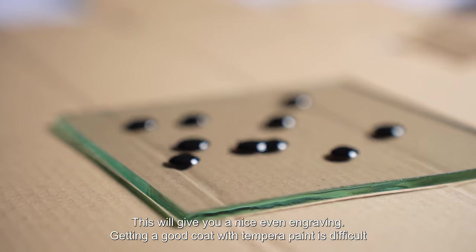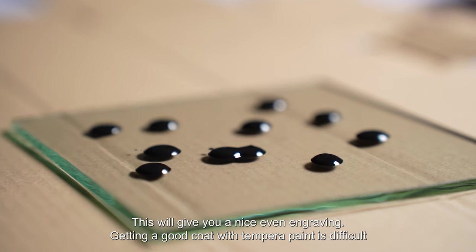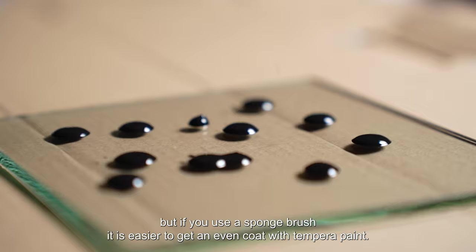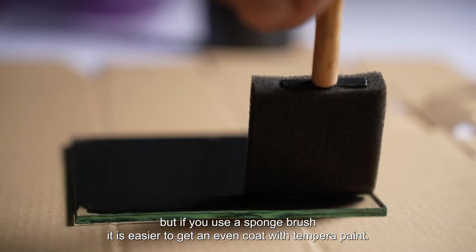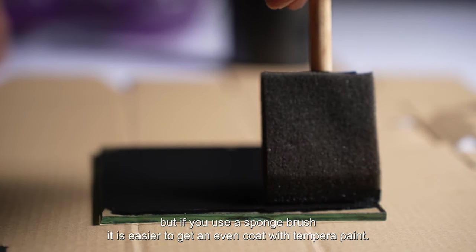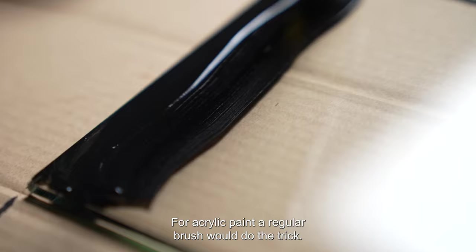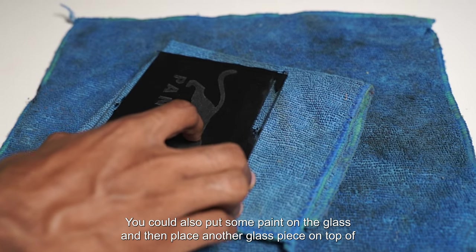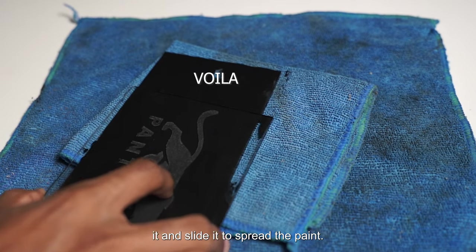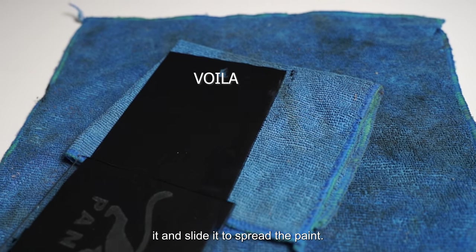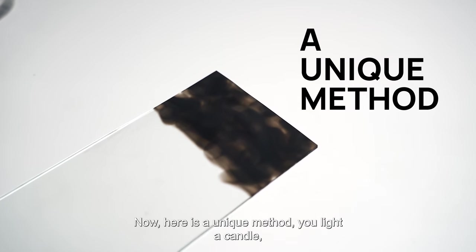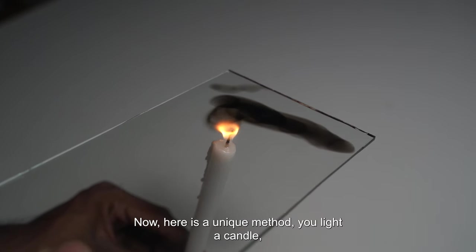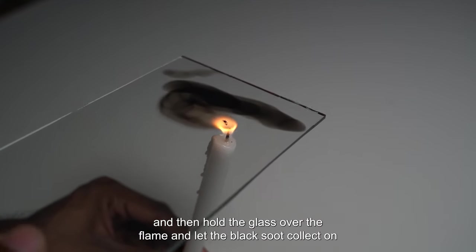Getting a good coat with tempera paint is difficult, but if you use a sponge brush it's easier to get an even coat with tempera paint. For acrylic paint, a regular brush would do the trick. You could also put some paint on the glass and then place another glass piece on top of it and slide it to spread the paint.